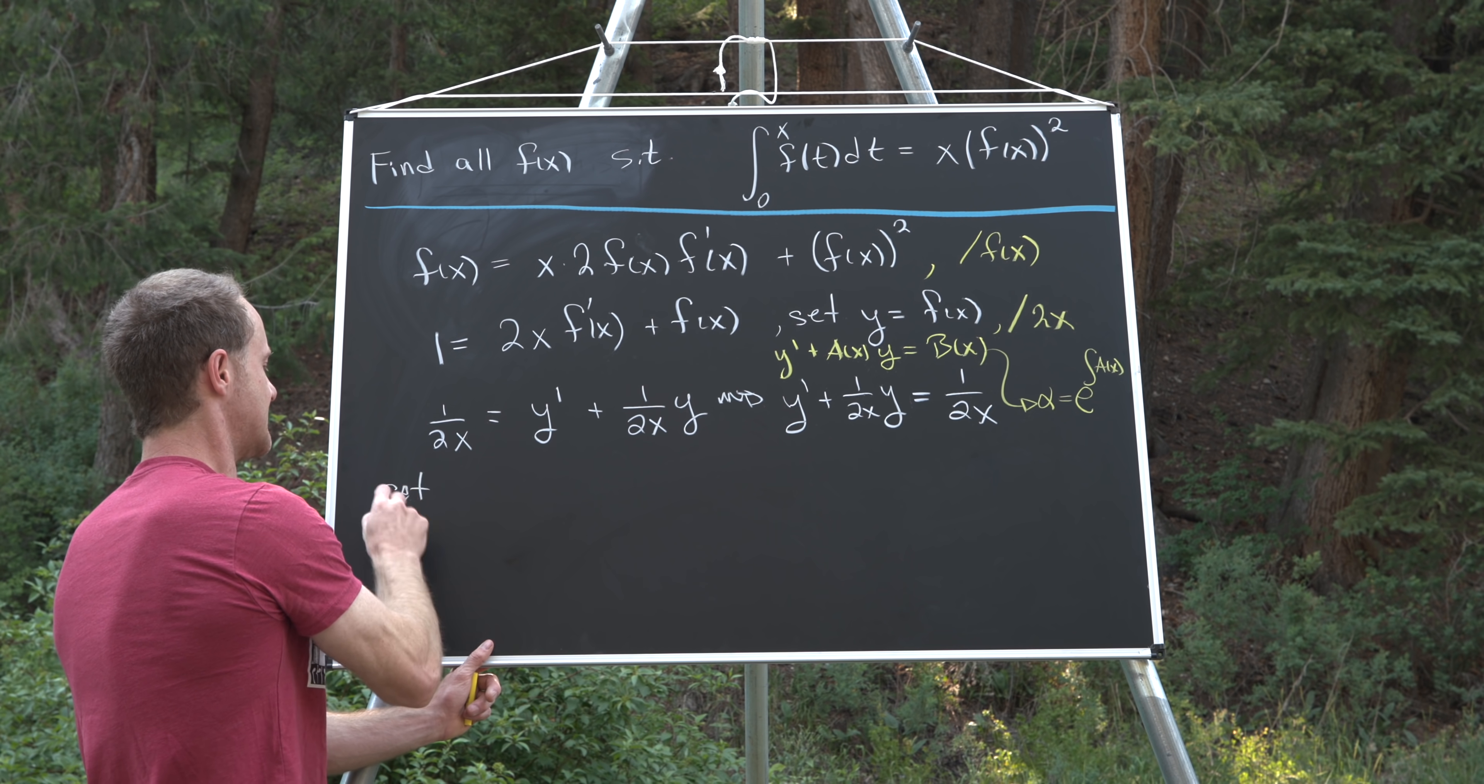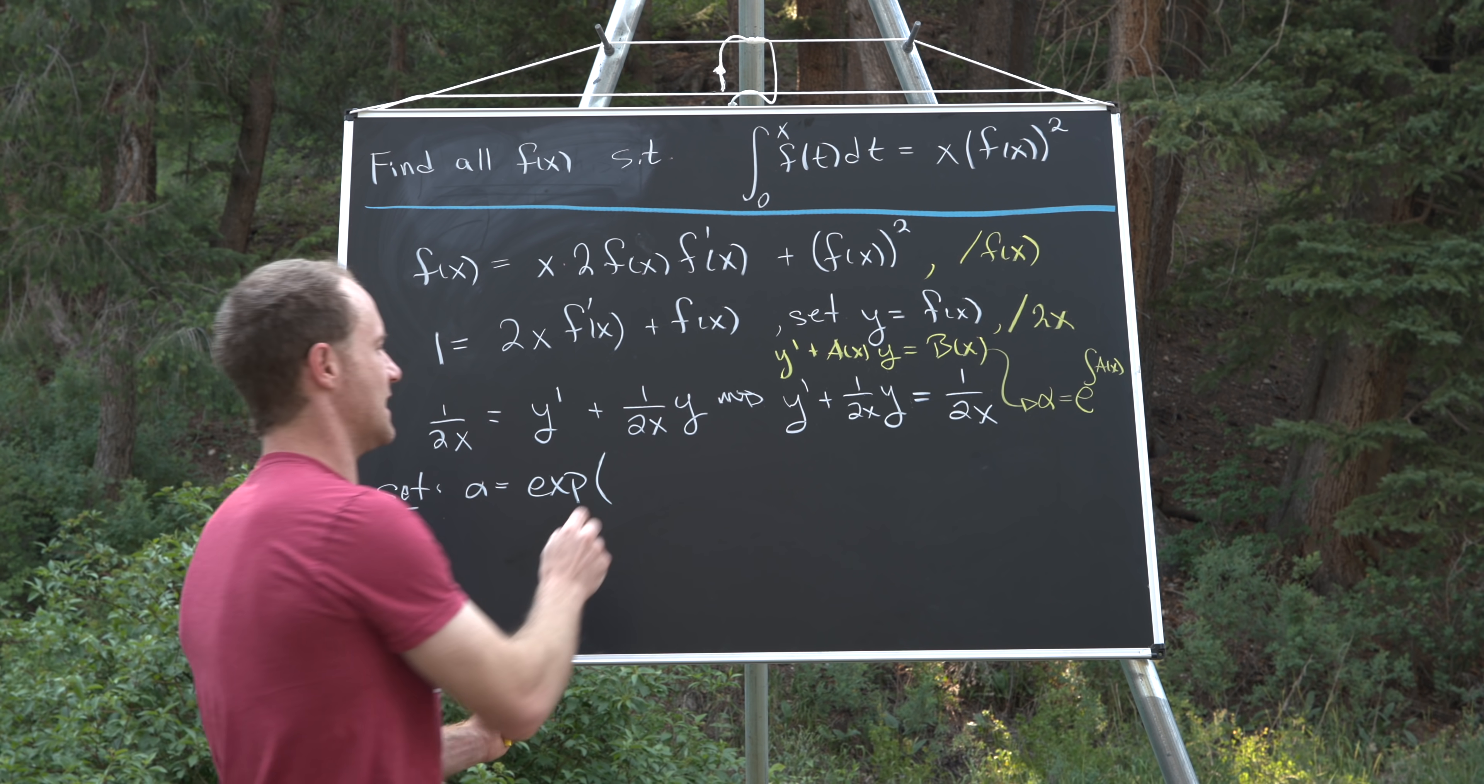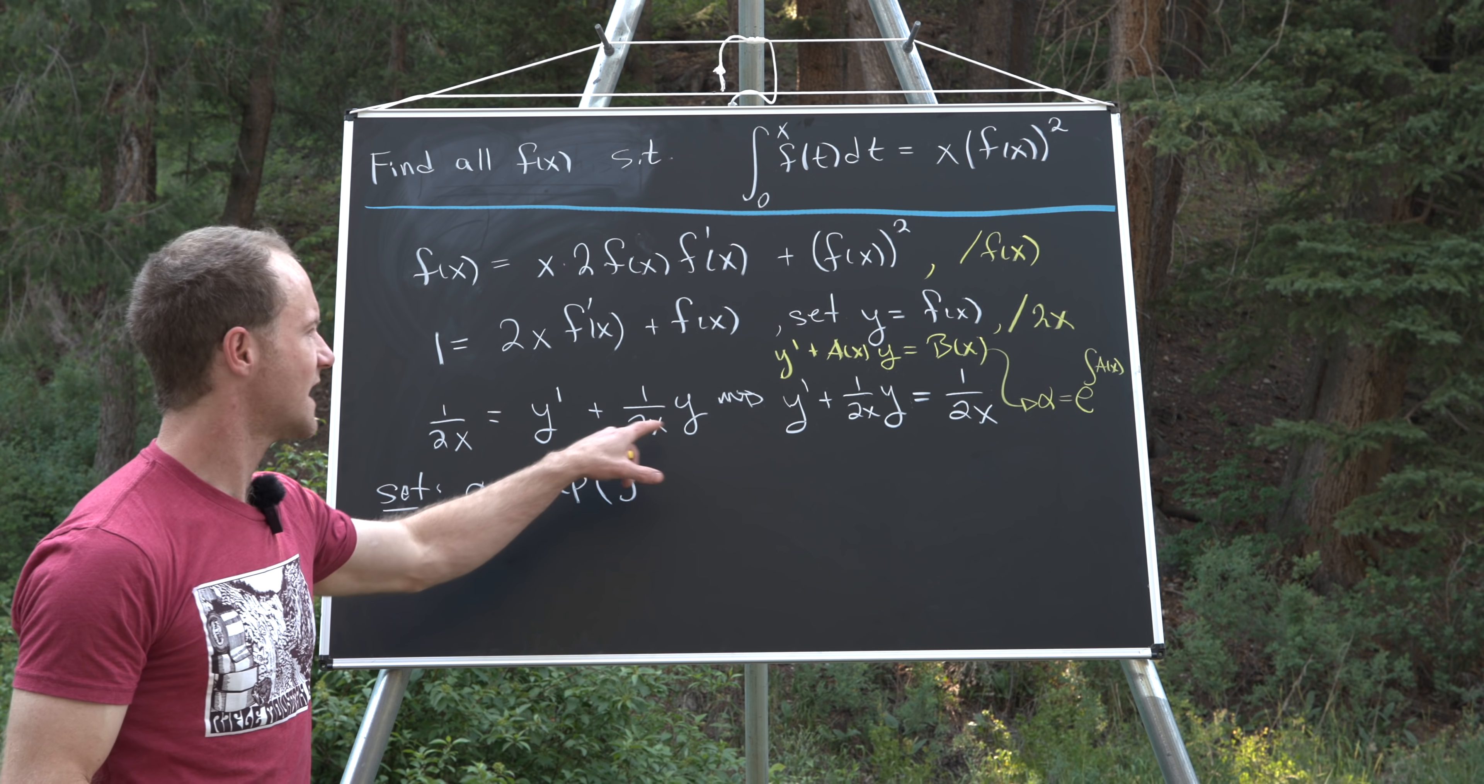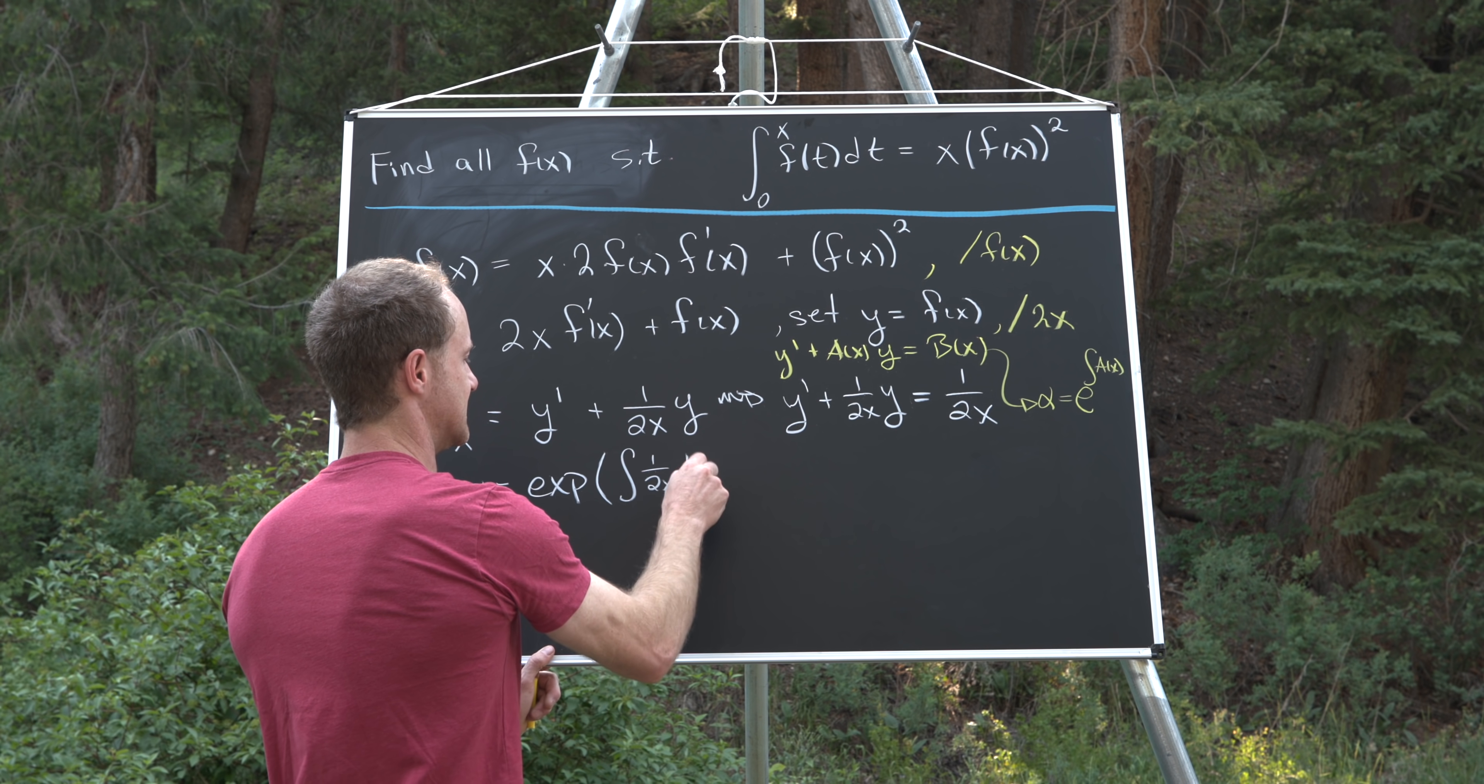So let's maybe set alpha equal to the exponential, I'll write it as exp, and then the antiderivative of a of x. But for us, a of x is being played by 1 over 2x. So we've got 1 over 2x dx.